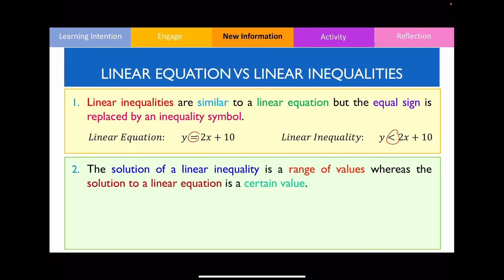The second biggest difference between a linear equation versus a linear inequality is that the solution — meaning the answer — of a linear inequality can contain multiple values, whereas the solution of a linear equation can only take on one particular value.